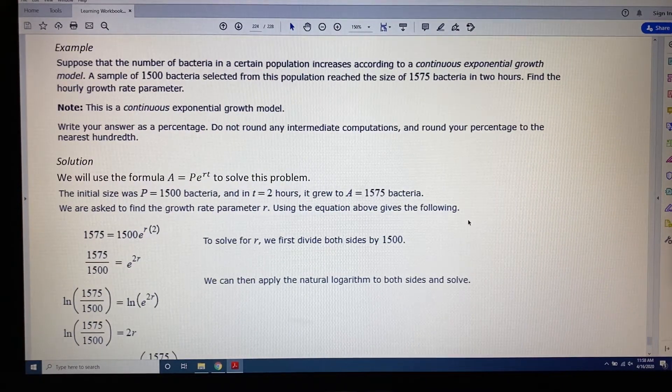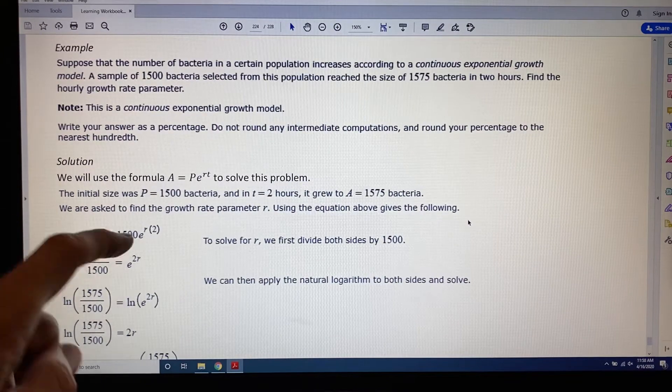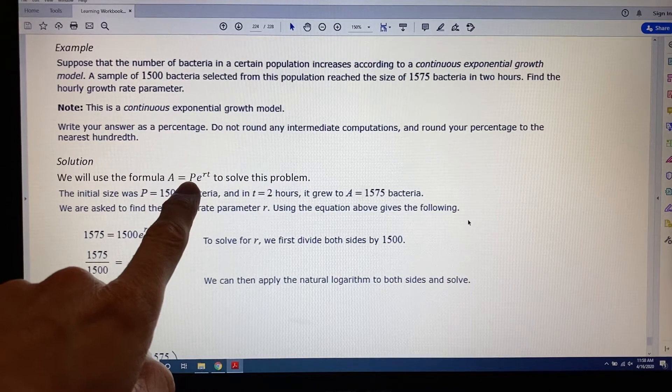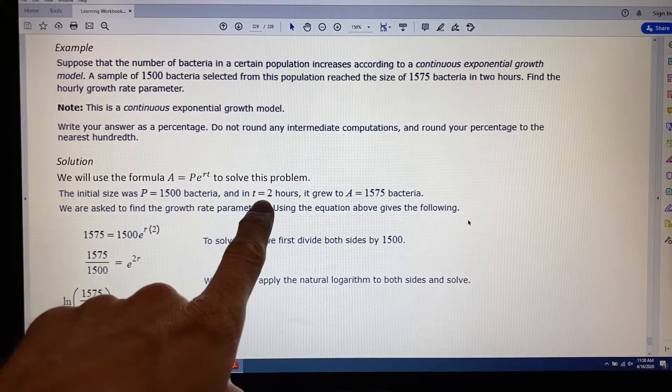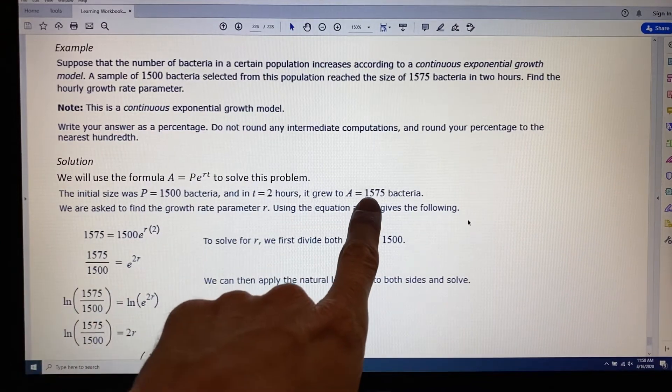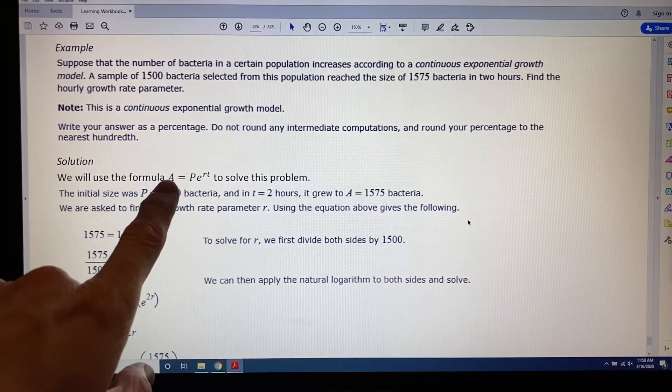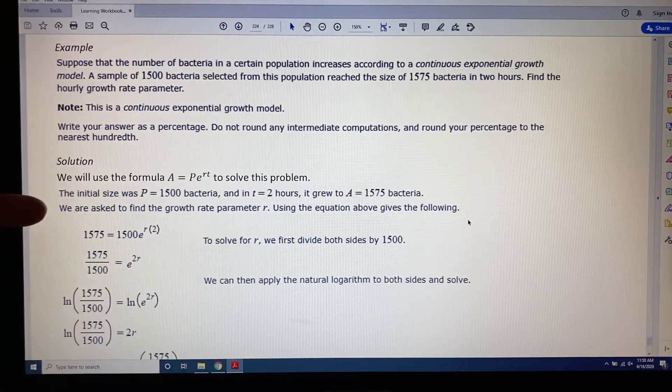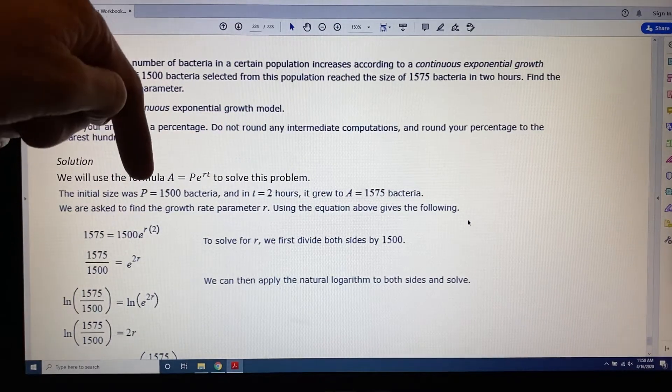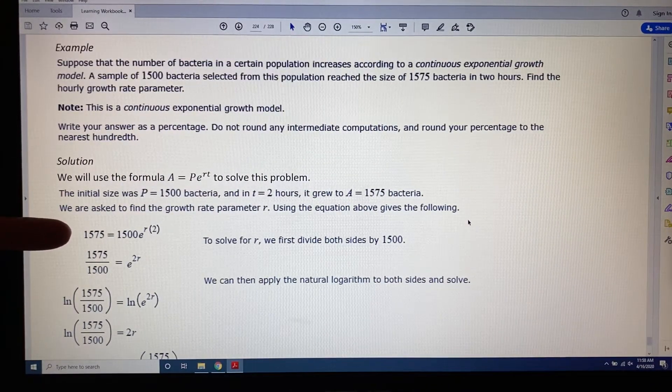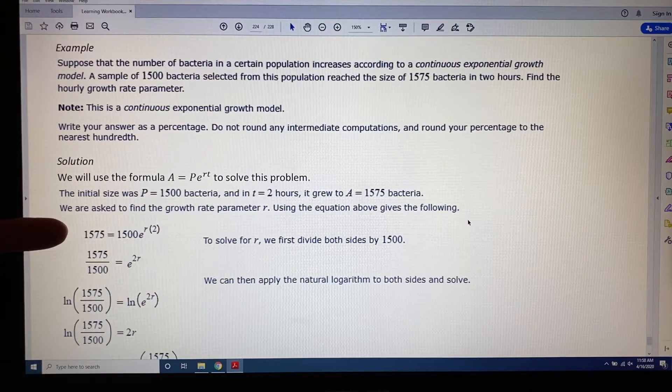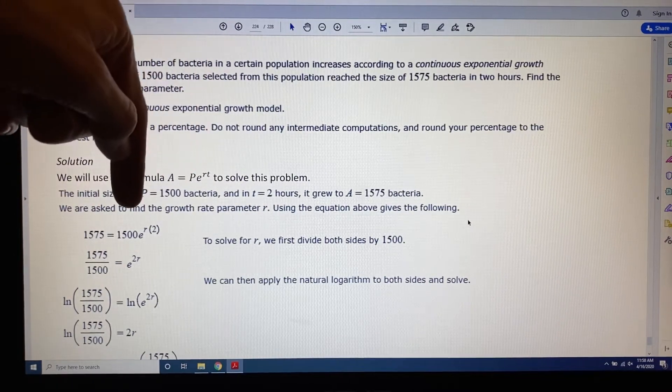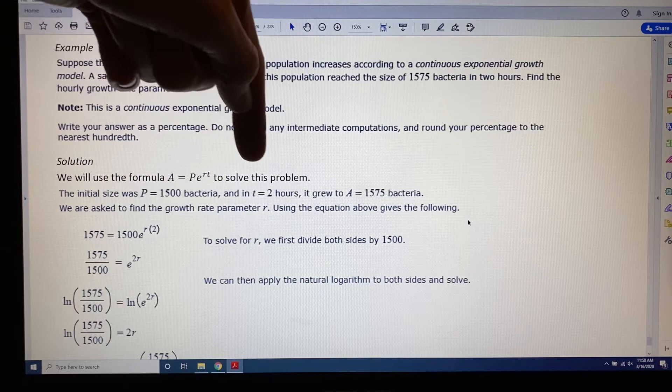So we're going to use the formula A equals Pe to the RT. The initial size of the bacteria was 1500, that's the amount we started with, so that is P. And the time was two hours, so that is T. It grew to 1575 bacteria, so that is A, the amount in the future. We're asked to find the growth rate parameter, R, using this equation. So we plug in the value of P, T, and A into the equation. The only variable left is R, and we can solve for R. So we get A is 1575, P is 1500, T is 2, and R is the variable we're solving for.